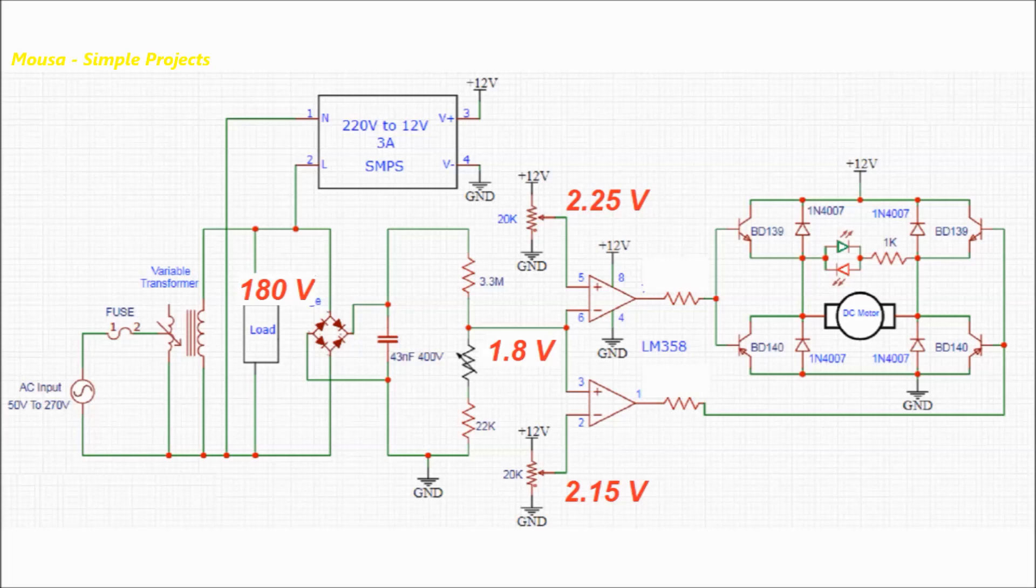But if the voltage suddenly drops to 180 volts, for example, the voltage at this point will be 1.8 volts. In this case, the output of the first op-amp stays high because the voltage at non-inverting input is more than the voltage at inverting input. But the output of the second op-amp will be low because the voltage at inverting input is higher. So the motor that's connected to the transformer shaft starts to spin and correct the voltage.